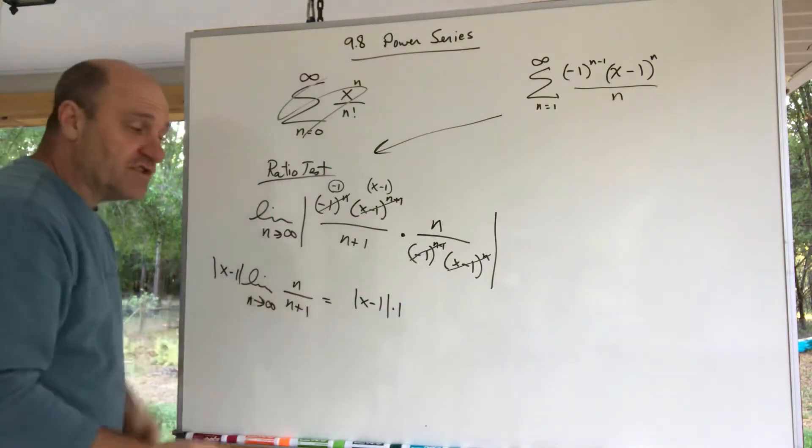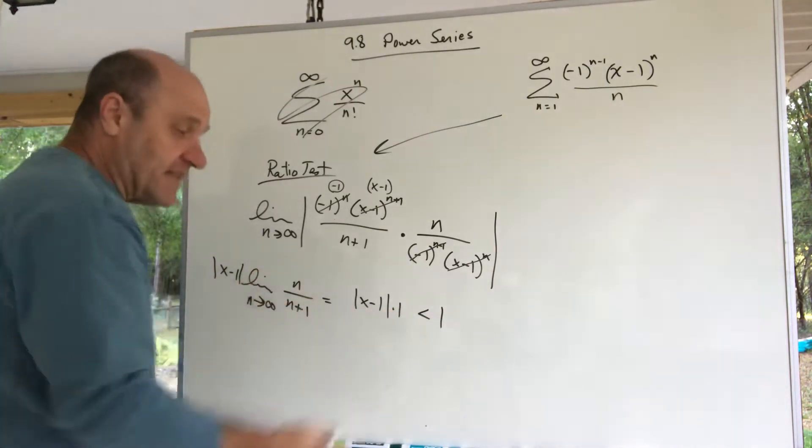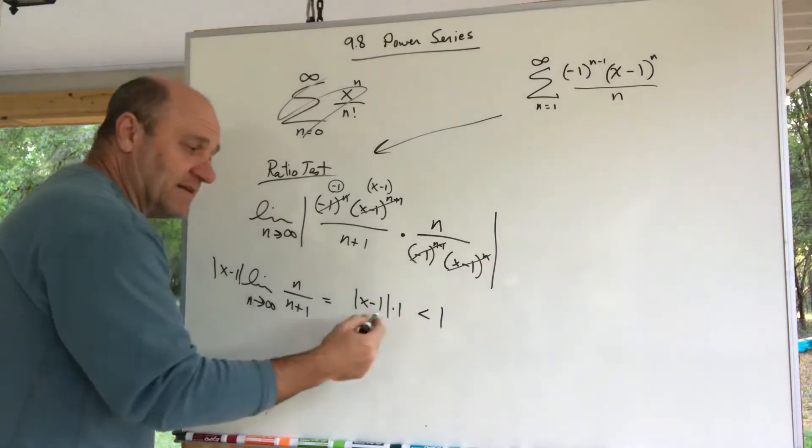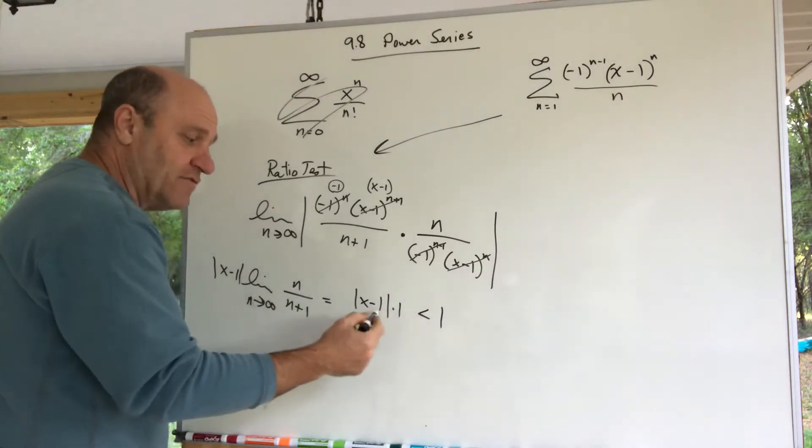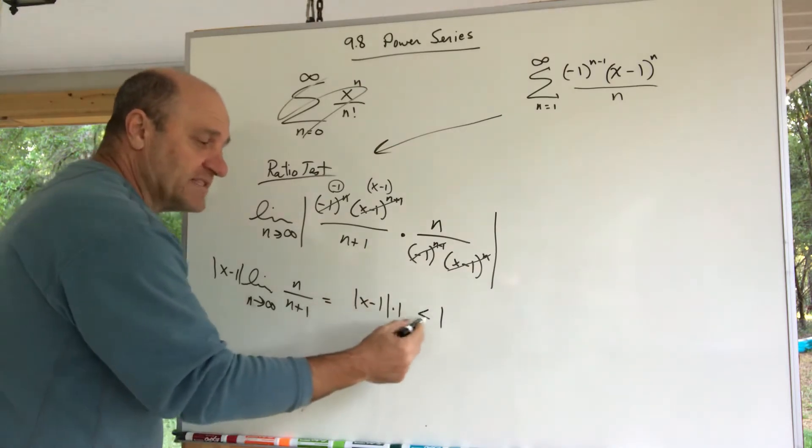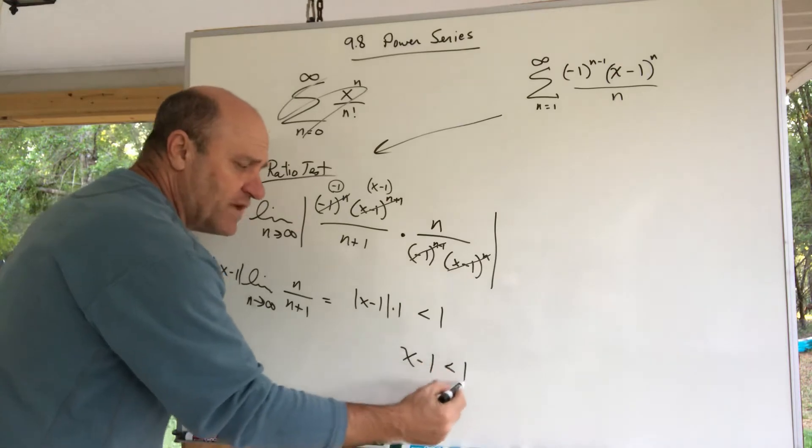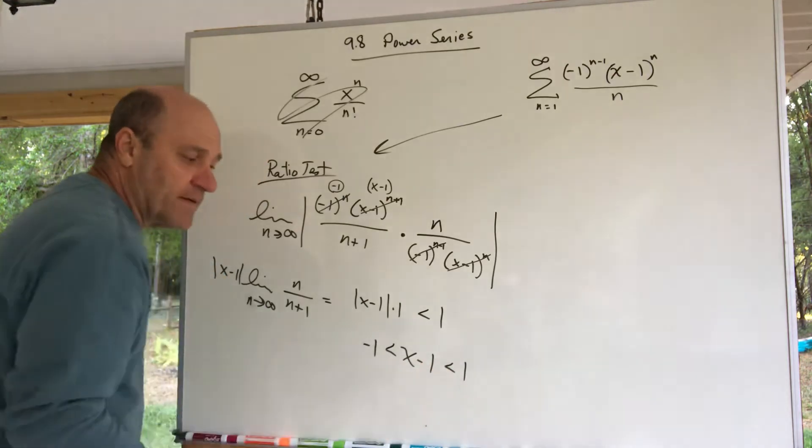Well, when is this less than 1? Well, it's a little absolute value inequality here. When the absolute value of x minus 1 is less than 1, I like to make a little sandwich: x minus 1 is between 1 and negative 1 is what that means.